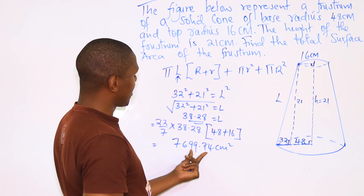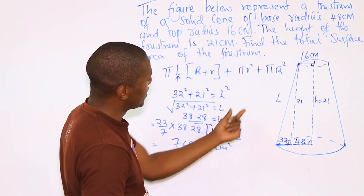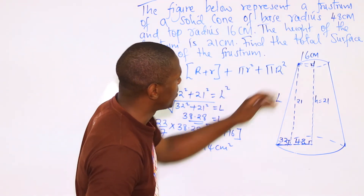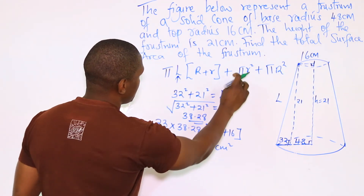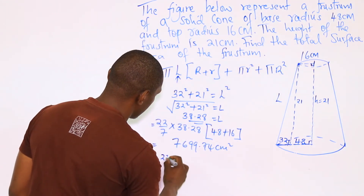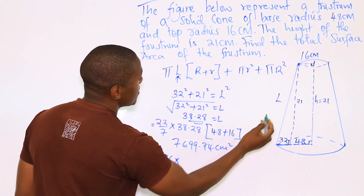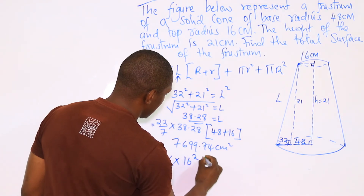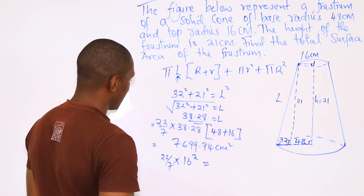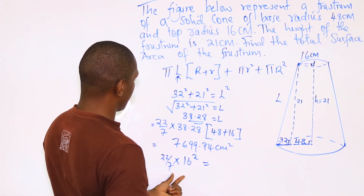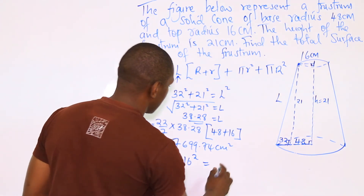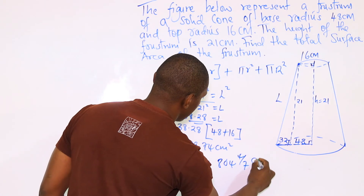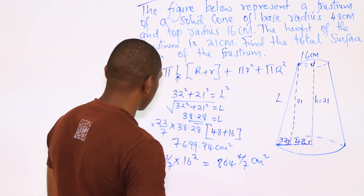This is the area of the curved surface of that frustum. Now we need to add the area of the top. The area of the top is π r², that is 22/7 times 16 squared. When you key in your calculator, that gives 804 4/7 centimeters squared.